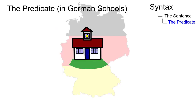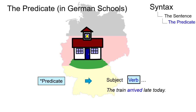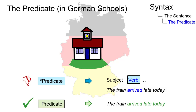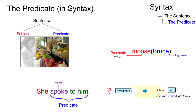In German schools, pupils are taught that the term predicate refers to the verb of a sentence only. Later, they learn that it actually refers to the statement made in a sentence. In general terms, the predicate can be identified as any parts of phrases in a sentence besides the subject noun phrase.